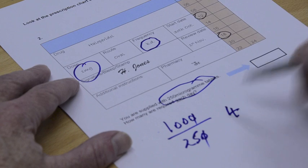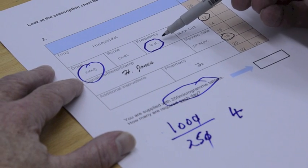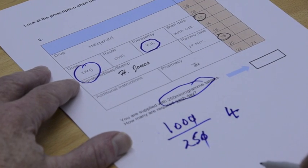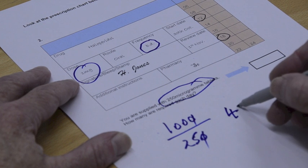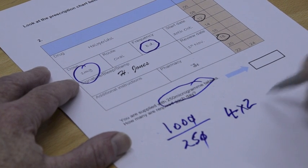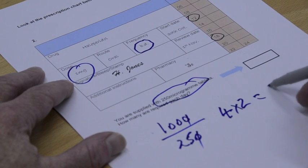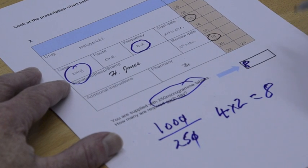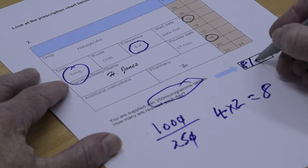But, don't forget, it was BD twice a day. Bicycle a day, if you like. So it is actually twice that amount and that gives us 8. Or, don't forget, if you're filling in the answer somewhere, it's 8 tablets.